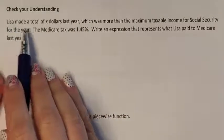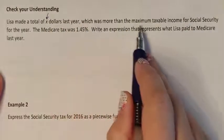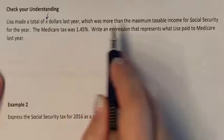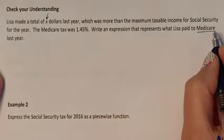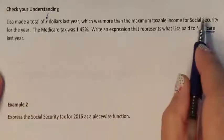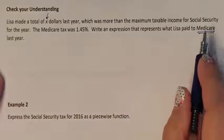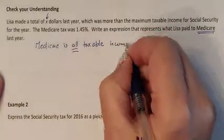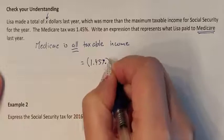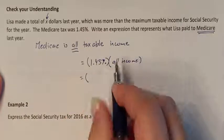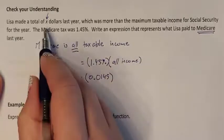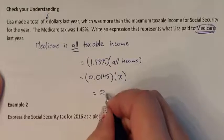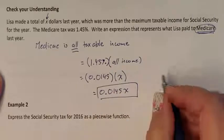Check your understanding: Lisa made a total of X dollars last year, which is more than the maximum taxable income for Social Security, so she maxed out her Social Security. The Medicare tax is 1.45%. Write an expression for what Lisa paid in Medicare. Since Medicare is always based on your entire income, we have 1.45% multiplied by X. As a decimal, that is 0.0145X, which is her Medicare payment.